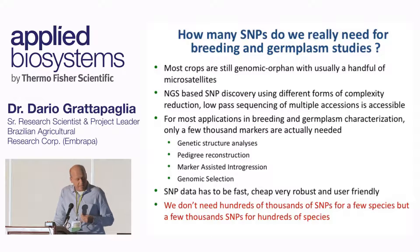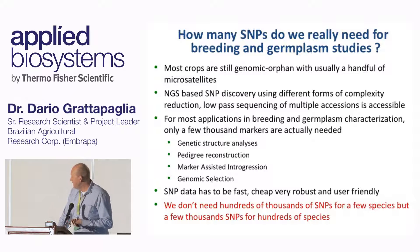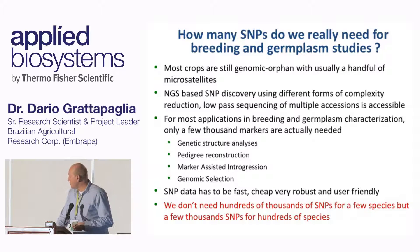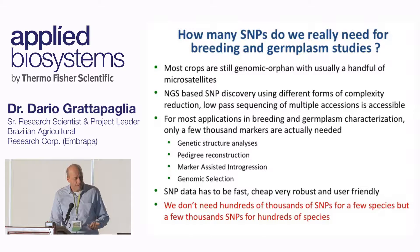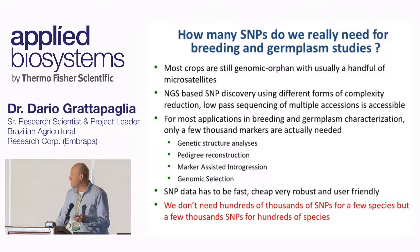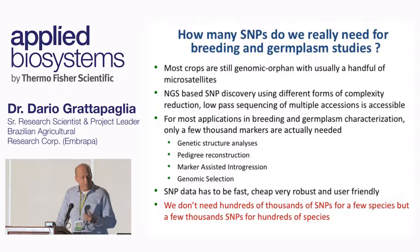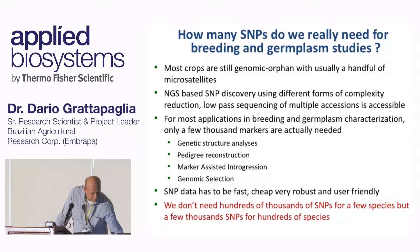The big issue is that SNP data has to be fast, cheap, very robust, and user-friendly. When you deal with several breeders around the country, you have to deliver data in ways that will be easy to open and use. We realized that we don't need hundreds of thousands of markers for a few species, but we really need a few thousand markers for several hundreds of species. And so this is where we came from.